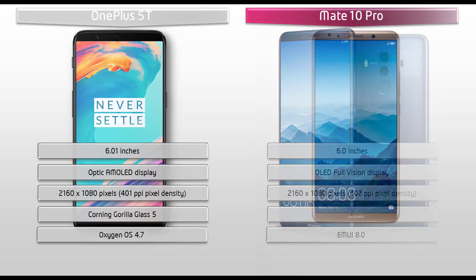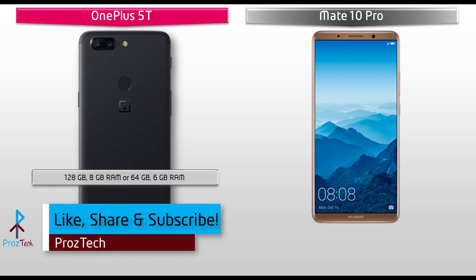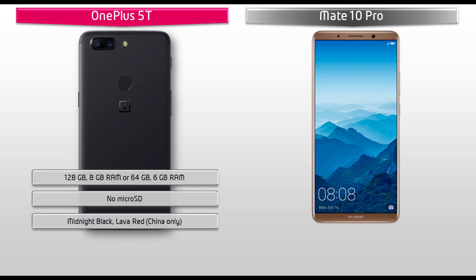Talking about internal memory, the OnePlus 5T comes with 2 variants: 64 and 128 GB of onboard storage and 6 or 8 GB RAM, but with no external microSD support. OnePlus has produced this device in only 2 colors: midnight black and lava red. Lava red will only be available in China, meaning you will not have gold, silver, or white color options for this device.